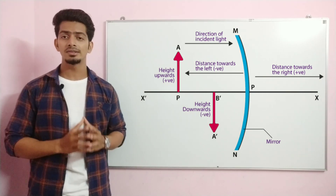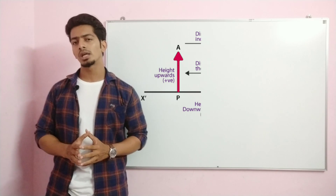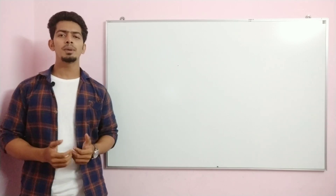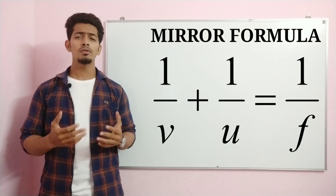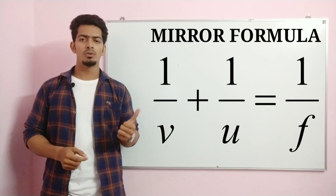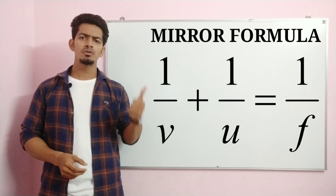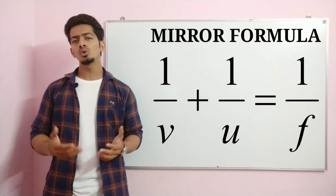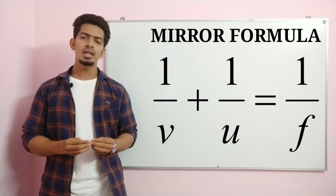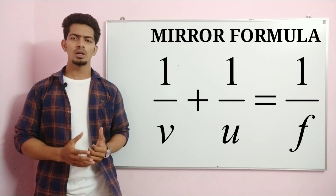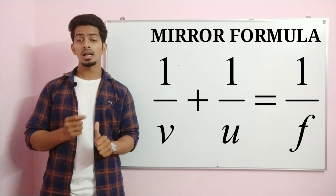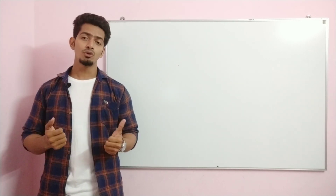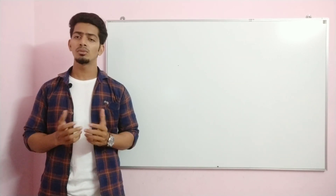Using this sign convention, we can solve problems with the mirror formula. The mirror formula is: 1/f = 1/v + 1/u, where f is the focal length, u is the object distance, and v is the image distance. We can find the focal length if we have the image distance and object distance, and vice versa.